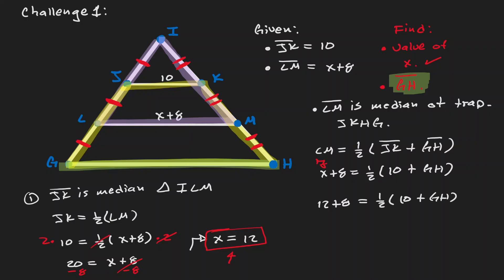Let's combine like terms on the left-hand side. So that will give us 20. Let's multiply by 2. And let's finish it up by subtracting 10.